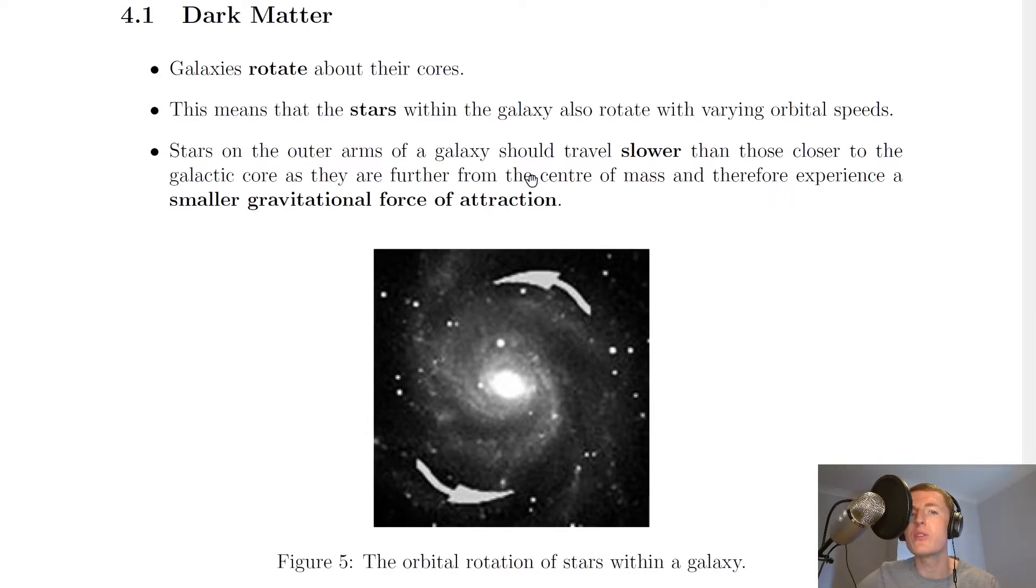It says that stars on the outer arms of a galaxy should travel slower than those closer to the galactic core as they are further from the centre of mass and therefore experience a smaller gravitational force of attraction.